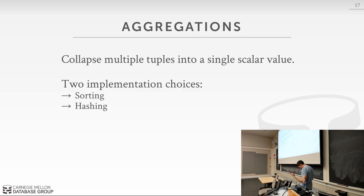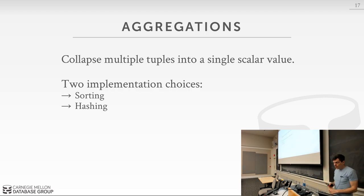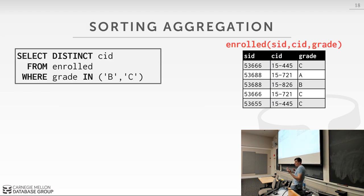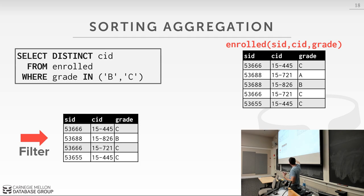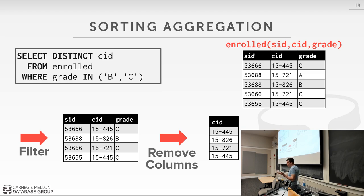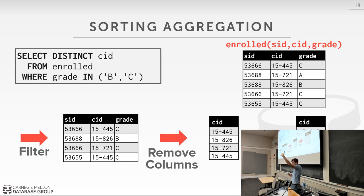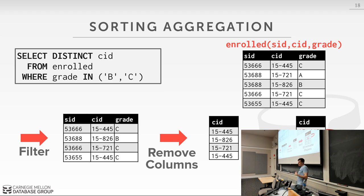Now we know how to sort — what can we do with it? ORDER BY is the obvious case. But we can also use sorting for aggregations. For example, with a DISTINCT on course ID: the query plan does a sequential scan, applies the WHERE clause filter, projects away unwanted columns, sorts the output keys, and then walks through the sorted output maintaining a buffer of the last value seen. If we encounter a value we've seen before, it's a duplicate and we skip it.